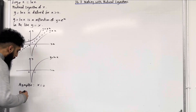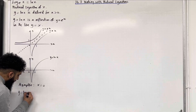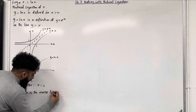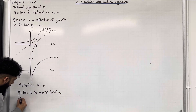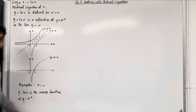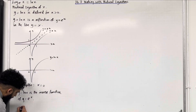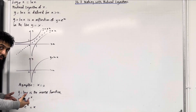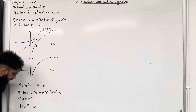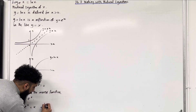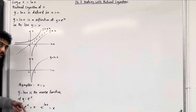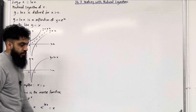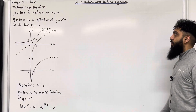y = ln x is the inverse function of y = e^x. For this reason, ln(e^x) = x — ln and e are inverses of each other, so they cancel out. In the same way, e^(ln x) = x — e and ln are inverses of each other, so they cancel out. These are the key facts of 14.7 working with natural logarithms.